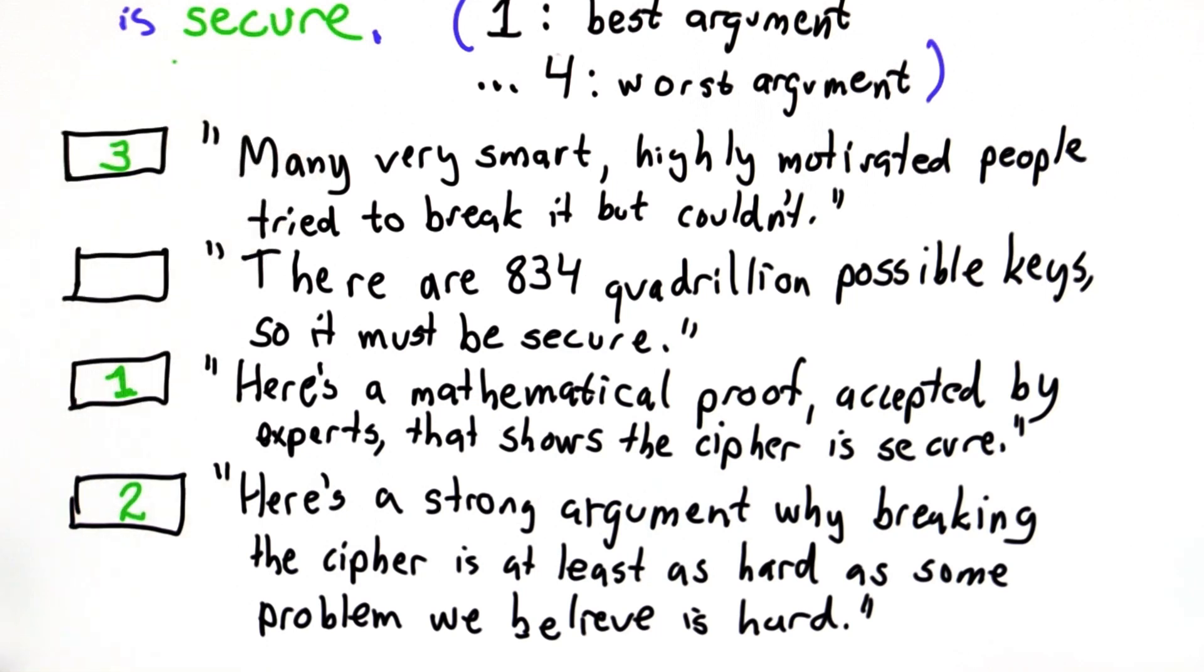But ultimately, the best we can do is show that we think it's secure because it has these properties, and lots of smart people weren't able to break it. But that's not a very satisfying way to know it's secure. We'd certainly much rather have the strong mathematical proof.